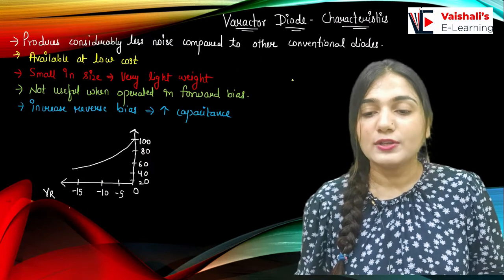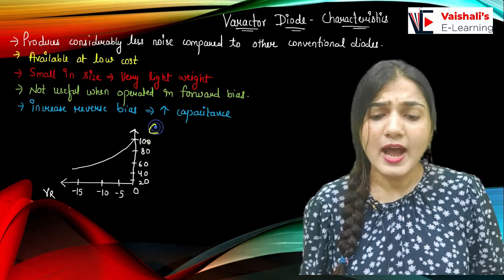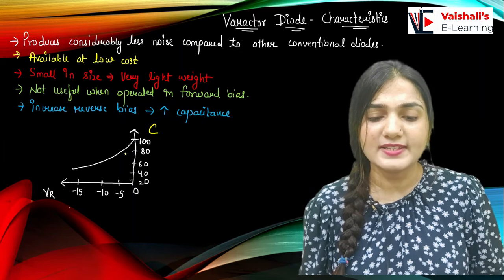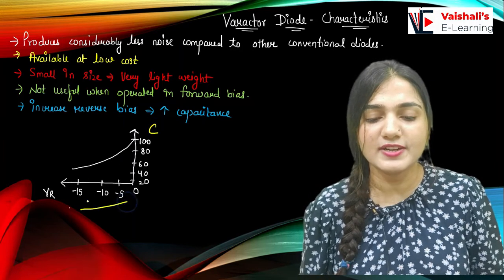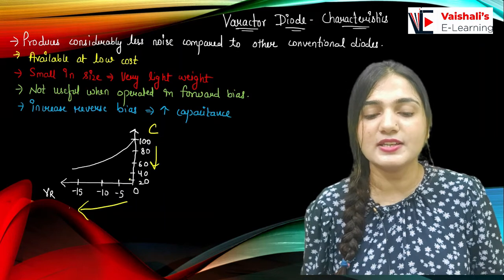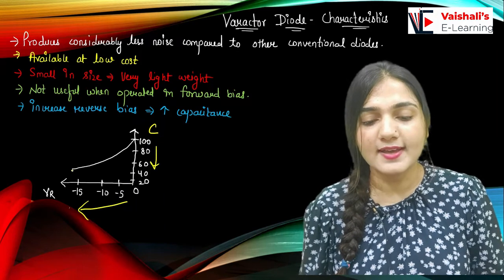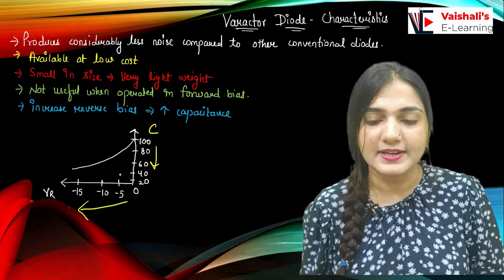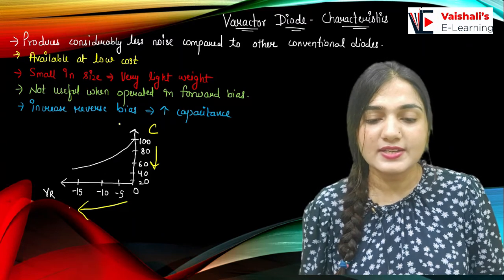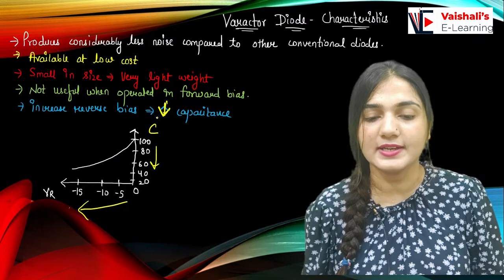Now coming to the characteristics of the varactor diode. Looking at the plot of capacitance versus reverse bias voltage: as we increase the reverse bias voltage, the capacitance decreases. This is how the characteristic curve is represented — increase reverse bias voltage, decrease capacitance.